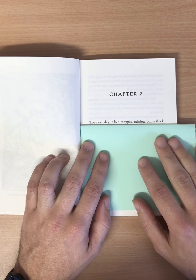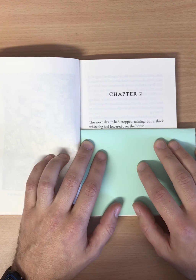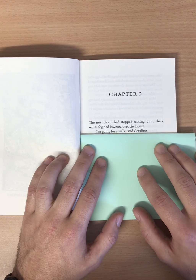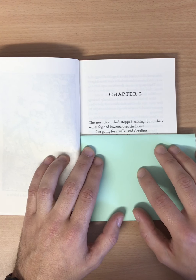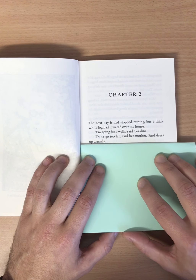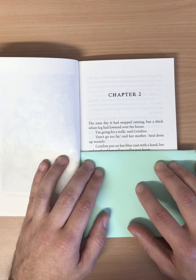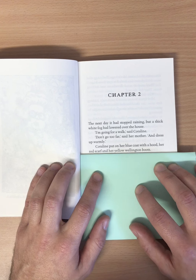Chapter 2. The next day it had stopped raining, but a thick white fog had lowered over the house. I'm going for a walk, said Coraline. Don't go too far, said her mother, and dress up warmly. Coraline put on a blue coat with a hood, her red scarf and her yellow Wellington boots.